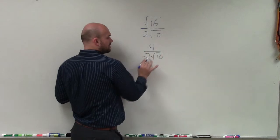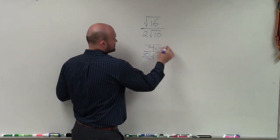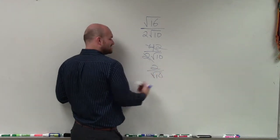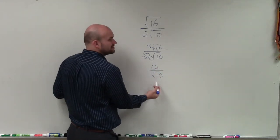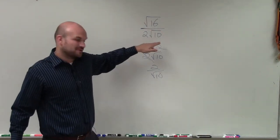Now, what's nice about this is I can divide 4 divided by 2, which leaves me with 2 over the square root of 10. It's much easier to rationalize the denominator of 2 divided by square root of 10 than rationalizing it with square root of 16 over 2 times square root of 10.